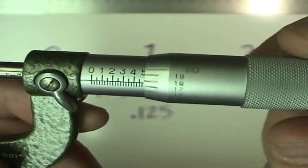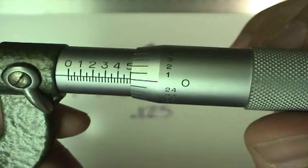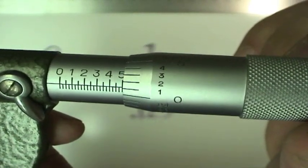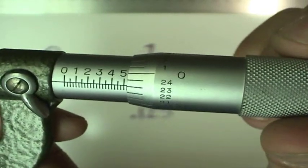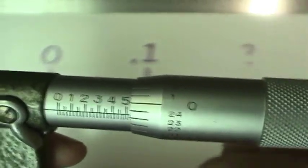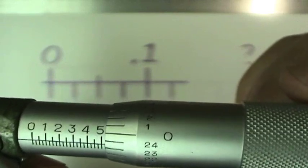Each time around with this thimble is one mark on the barrel scale. So each time around, we move forward a mark. You'll notice that they're graduated from 1, 2, 3, 4, 5, 10, 15, 20, all the way around to 25, and then it starts back at zero.